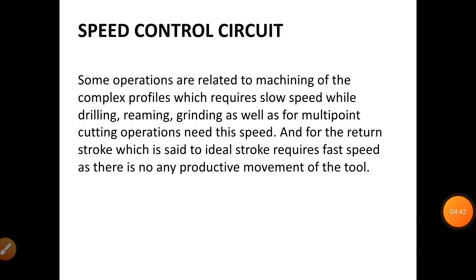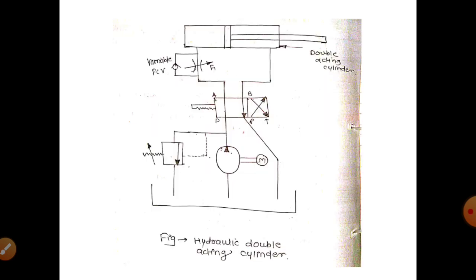The next circuit is the speed control circuit. In speed control, some operations related to machining of complex profiles require slow speed — such as drilling, reaming, grinding — as well as for multi-point cutting operations. For the return stroke, which is an idle stroke, fast speed is required as there is no productive movement of the tool. In the speed control circuit there are three types: meter-in circuit, meter-out circuit, and bleed-off circuit.